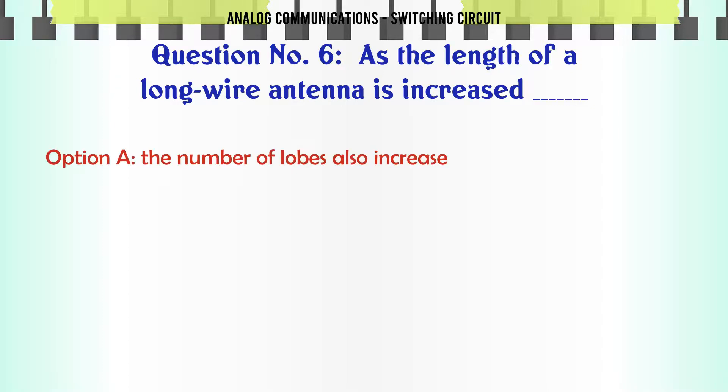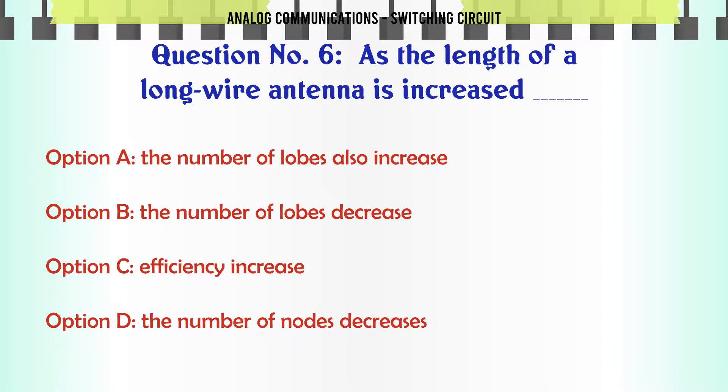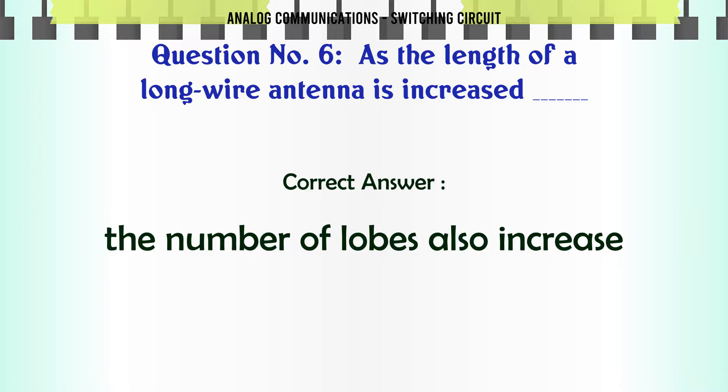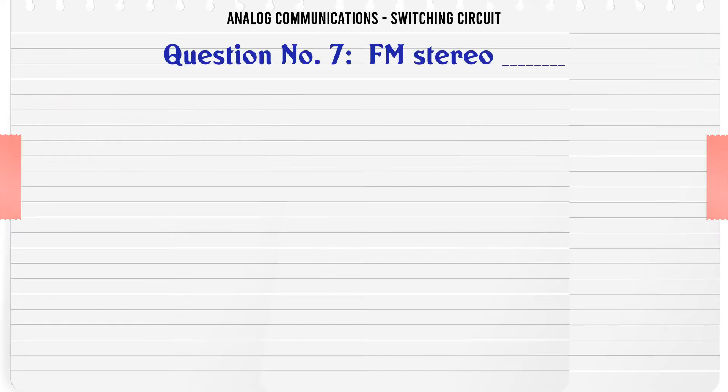Question: As the length of a long wire antenna is increased. Option A: The number of lobes also increase. Option B: The number of lobes decrease. Option C: Efficiency increase. Option D: The number of nodes decreases. The correct answer is The number of lobes also increase.